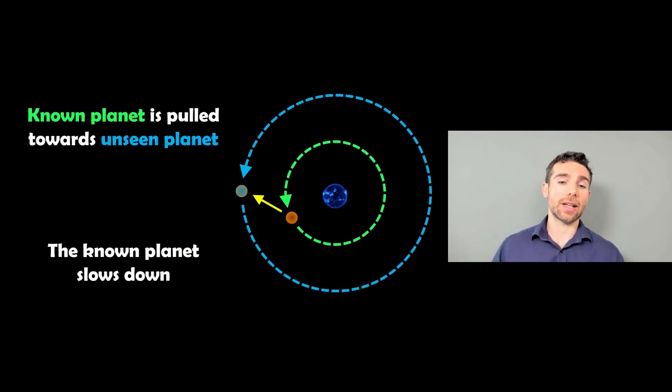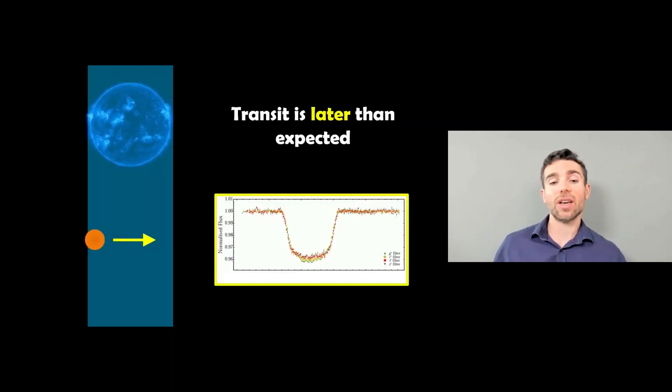Now as it goes past, it's going to do the opposite. As it's gone past, that unseen planet is actually going to gravitationally tug it back, which will then slow it down ever so slightly. So the next transit you're going to get is going to be slightly later than you would expect because it slowed it down.